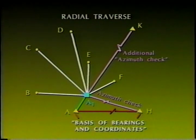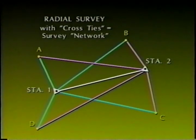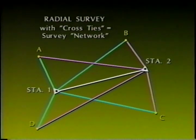The positions of control points located from radial surveys cannot be adjusted unless field ties are made from two traverse stations. When a radial survey is performed, additional cross-ties for angle and/or distance can be added to strengthen the correlation of the measurements and facilitate adjustment of random errors. This is referred to as building a survey network.